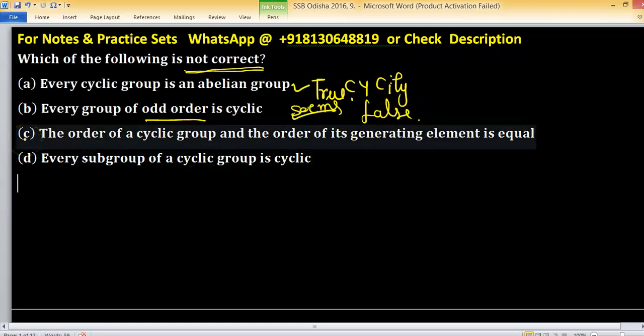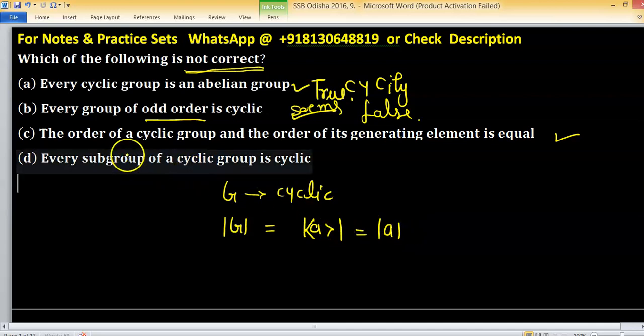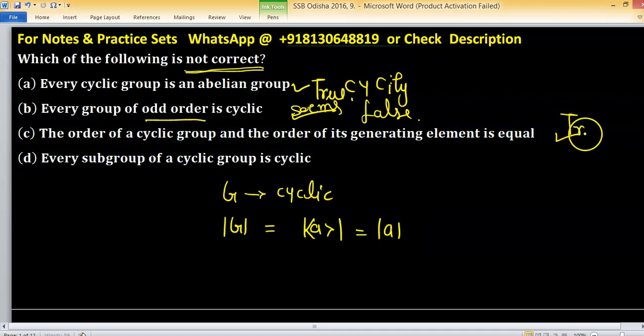Now check option c: The order of a cyclic group and the order of its generating element is equal. This is always true. If group is cyclic then order of group is equal to order of its generator. This statement is true.